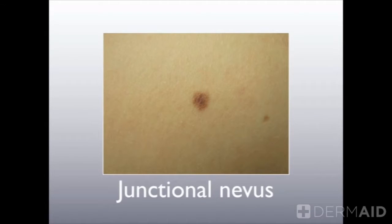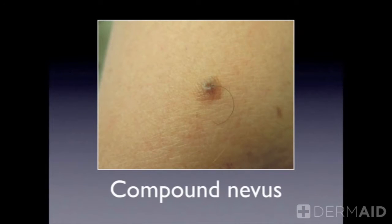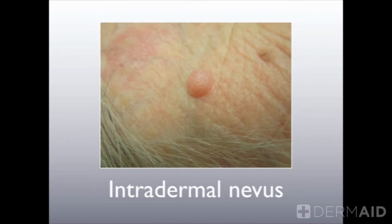Moles start out as junctional in most cases, so they're smooth and brown. Over time, the melanocytes will sink deeper into the skin, and when that occurs, the skin will raise — this is a very gradual change. As the skin raises, the mole may fade or change in color, and then it's called a compound nevus. A dome-shaped, kind of brown mole is often a compound nevus, with melanocytes present in both the top layer and the second layer of skin. When the melanocytes are all in the dermis, the second layer of skin, they're called an intradermal nevus — that's the third stage of maturation for most moles.